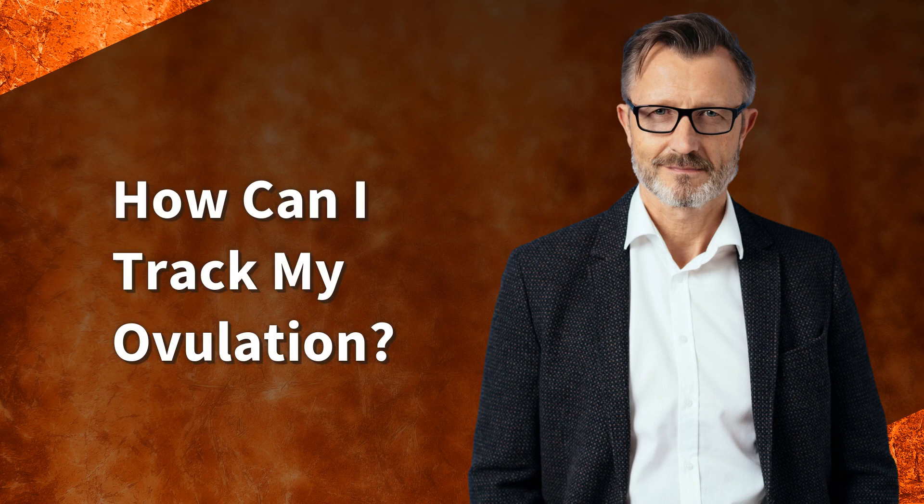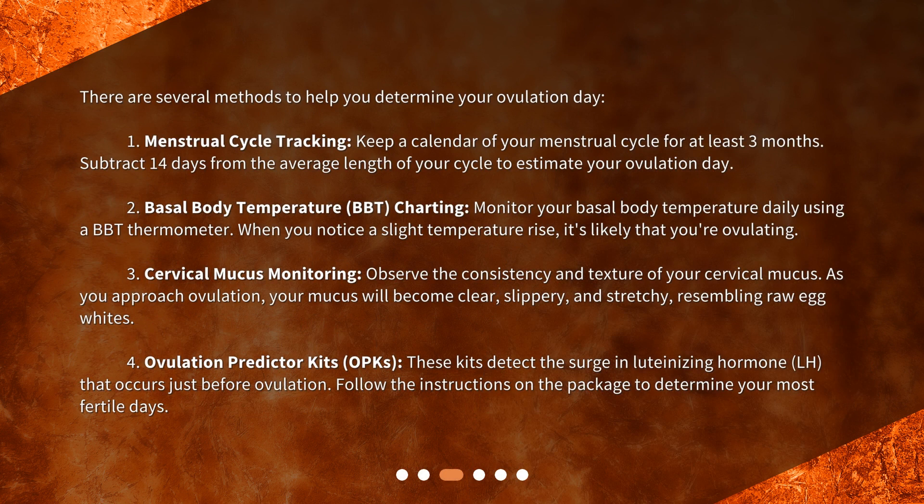How can I track my ovulation? There are several methods to help you determine your ovulation day. 1. Menstrual cycle tracking: Keep a calendar of your menstrual cycle for at least 3 months. Subtract 14 days from the average length of your cycle to estimate your ovulation day.